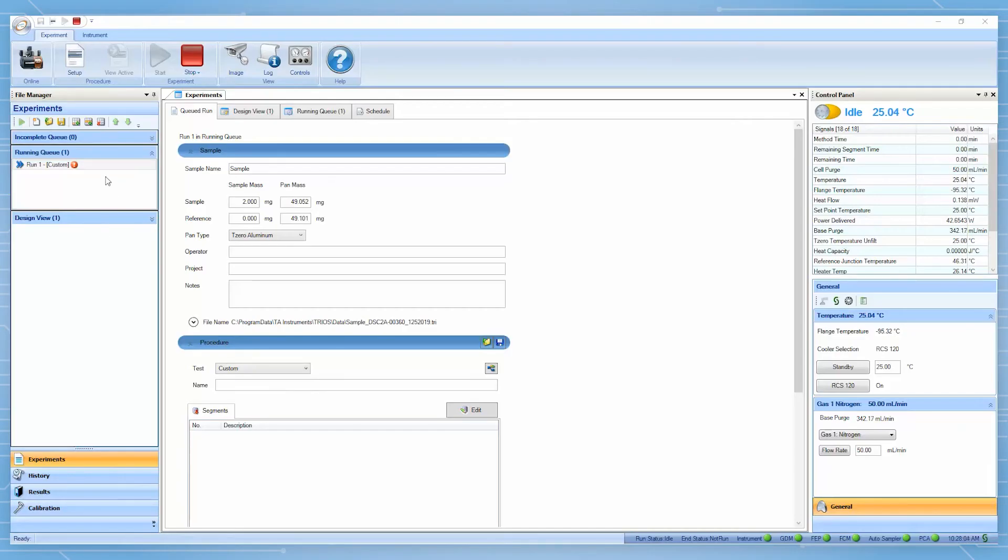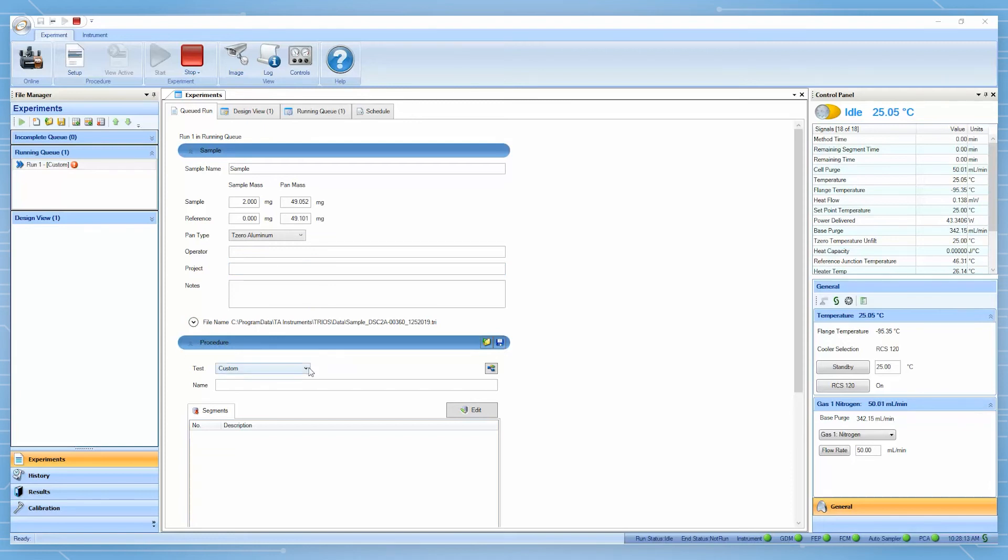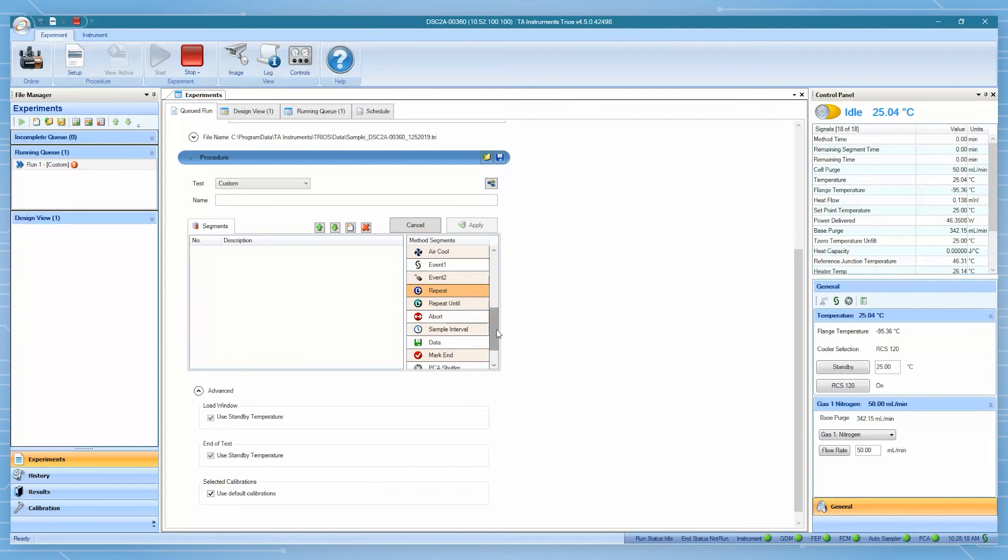To perform a PCA experiment, first input the sample name, sample and pan mass, select custom test in the procedure filter. Equilibrate at the temperature of the desired reaction temperature. Isothermal 2 minutes for a stable baseline.